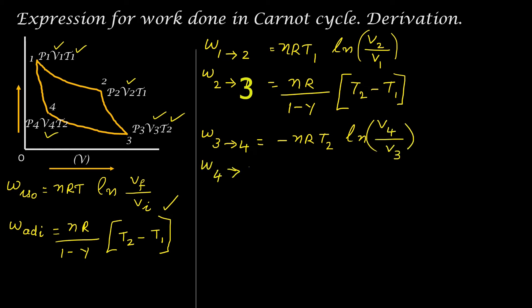Work done from 4 to 1: the process is adiabatic compression, equal to negative nR by (1 minus gamma) into (T2 minus T1).